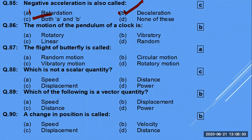Both deceleration and retardation refer to negative acceleration — when velocity is decreasing. The motion of a pendulum is vibratory motion. The flight of a butterfly is random motion. Displacement is not a scalar — it is a vector quantity.